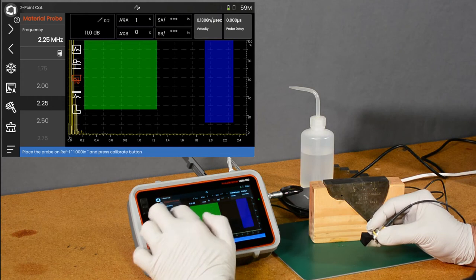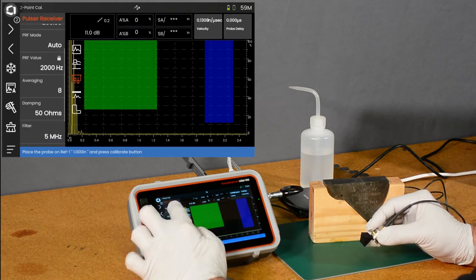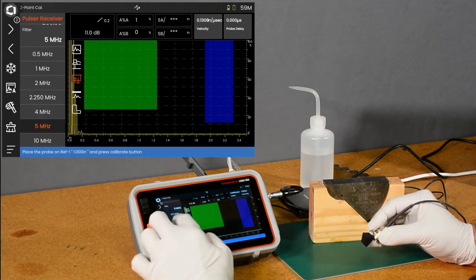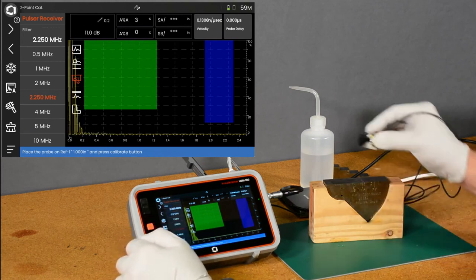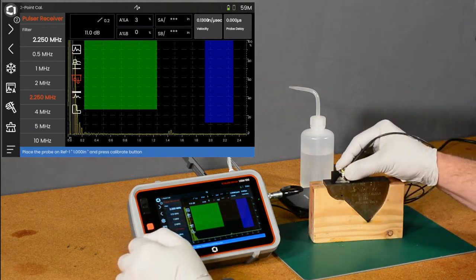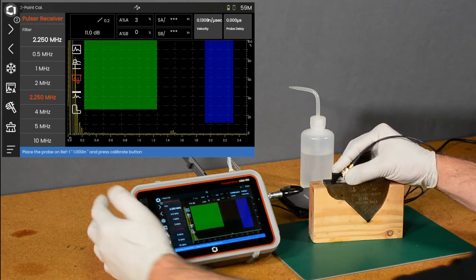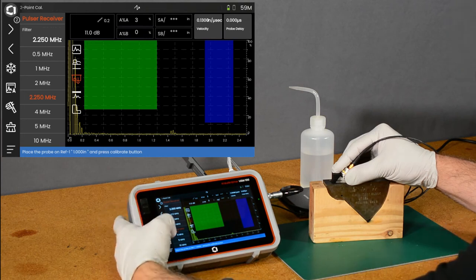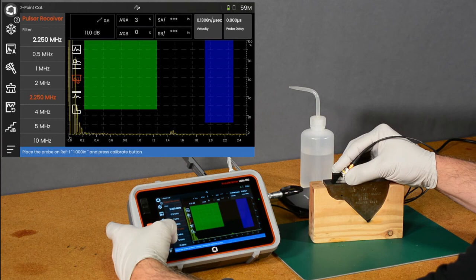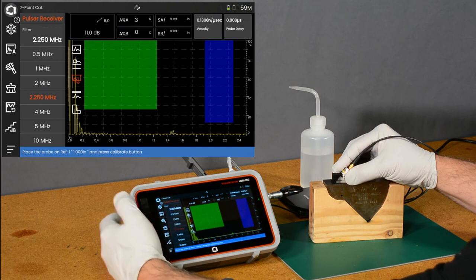And we're going to go to the pulse and receiver menu and we'll change our filter to two and a quarter megahertz. And we start to see now our echo. Let's take our gain up. Change our db step to some coarser steps. 6 db steps for now.